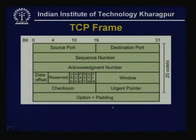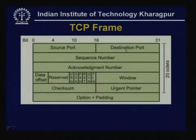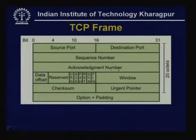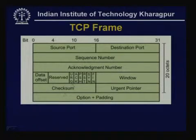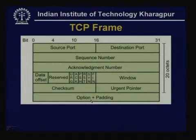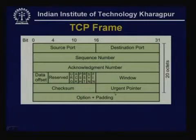The TCP frame has a 20-octet header. It includes source port, destination port, sequence number, acknowledgement number, header data offset, reserved bits, six flag bits, a window field for flow control, a 16-bit checksum for error detection, an urgent pointer, and an optional field plus padding — followed by data.